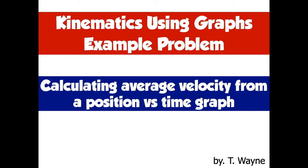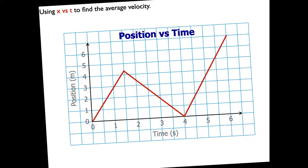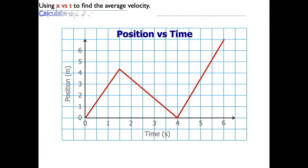This video is going to show you how to calculate the average velocity from a position versus time graph. So here's the question we're going to use to investigate this. Calculate the average velocity between 1 and 3.5 seconds.